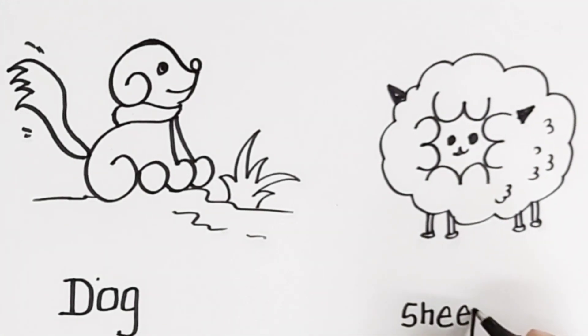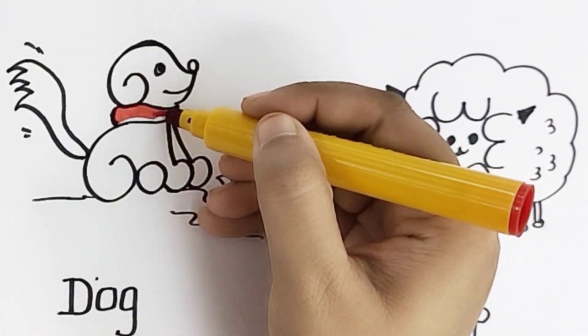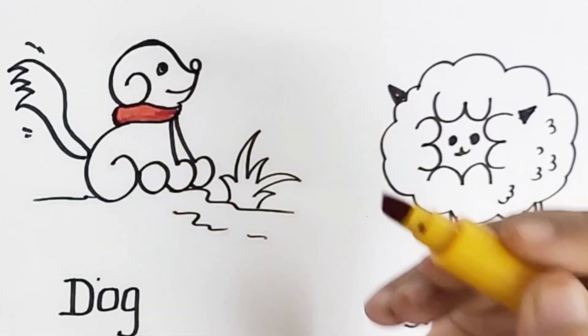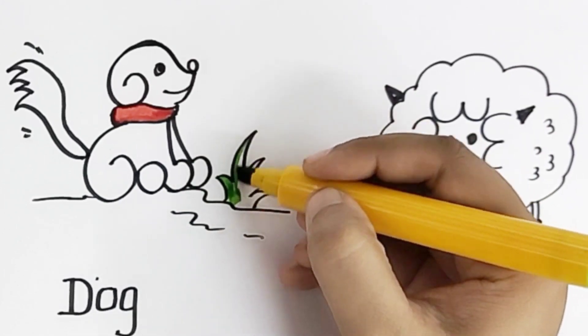And write down the name also. And now do the coloring using crayons, pencil colors, or black sketch pens also you can use. But make sure when you are doing coloring, you will fill the objects properly.